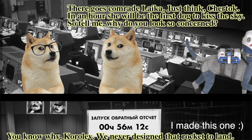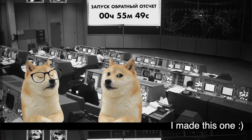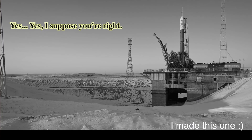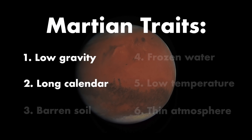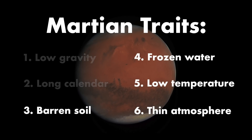Still, wouldn't it be kind of cool to have an extra 37 minutes every day? So we've discussed the qualities of Mars that we cannot change — namely the low gravity and long calendar — so let's move on to the traits we can change. Let's begin with Mars's barren soil.